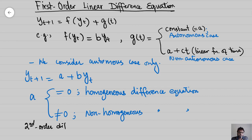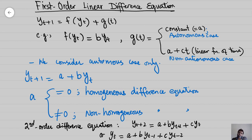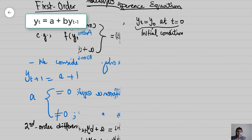A second order difference equation is written as y_{t+2} = a + b*y_{t+1} + c*y_t, where the subscript +2 indicates a 2-period lead. Iterating this for 2 periods, we can alternatively write it as y_t = a + b*y_{t-1} + c*y_{t-2}, where y_{t-1} is the first lag and y_{t-2} is the second lag. Adding further lags increases the order of the equation, so an nth order difference equation has n lags of the same variable.